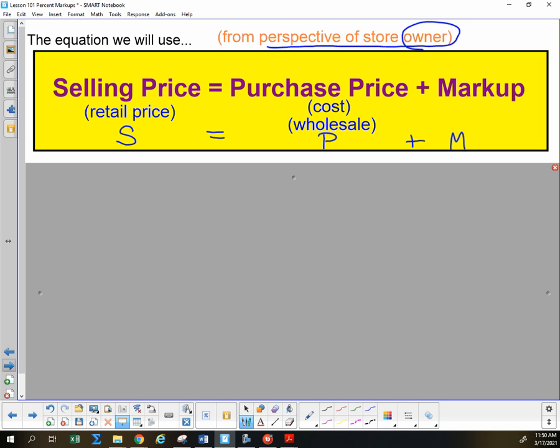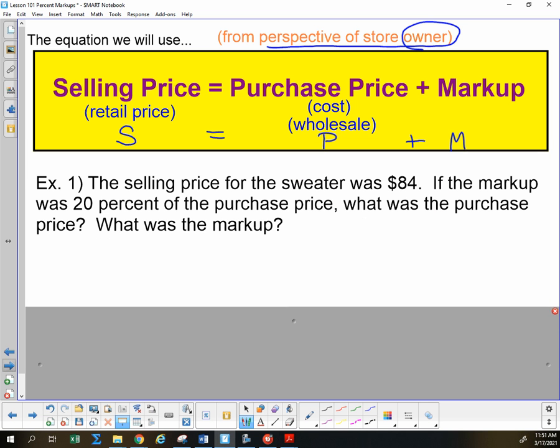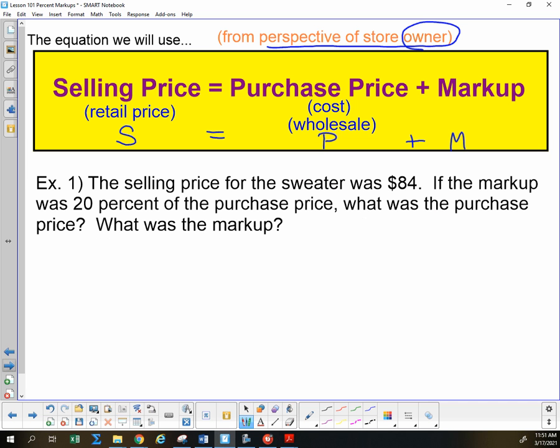Sometimes they will say selling price, sometimes they will say retail price. Wholesale means purchase price, what does the store owner have to pay for it. Sometimes they'll just say the cost for that store owner. There are generally speaking going to be two ways that will work for you to set up these problems. We can do it either with an equation or we can do it with a ratio table. So if we do it with our equation, P plus M equals S.